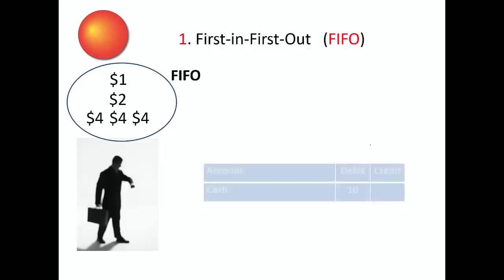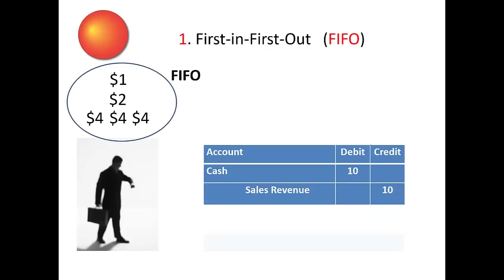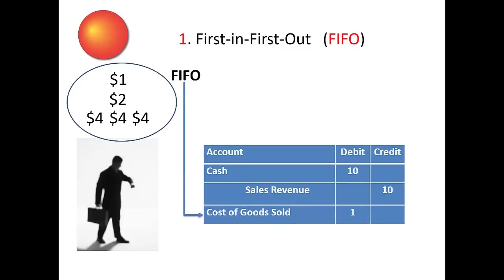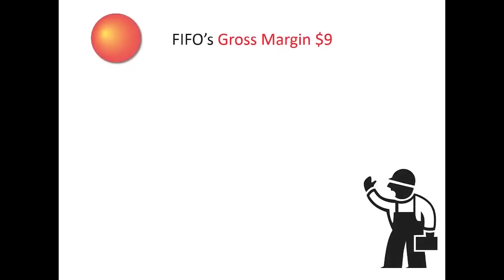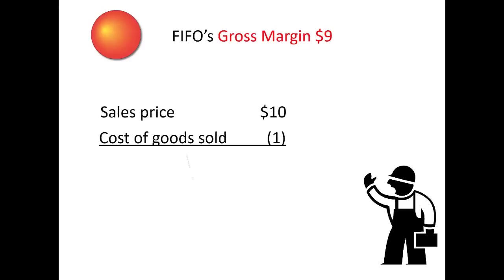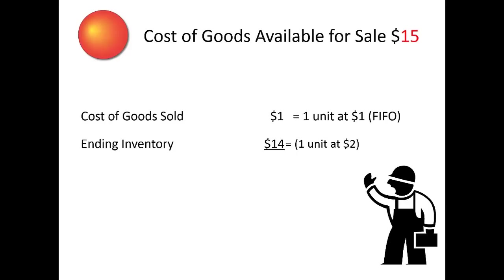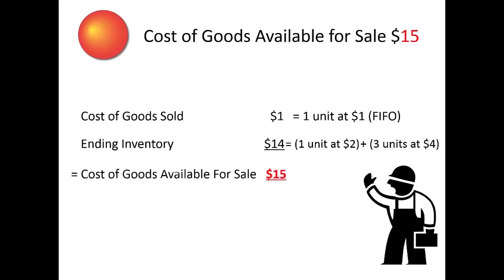This would require a debit to cash of $10 — assuming a cash sale — and a credit to sales revenue of $10, a debit to cost of goods sold for $1, increasing that expense, and a credit to inventory of $1, decreasing inventory. FIFO's gross margin turns out to be $9: sales price of $10 less cost of goods sold of $1. The original cost of goods available for sale of $15 reconciles as: cost of goods sold of $1 (one unit at $1) and ending inventory of $14 (one unit at $2 plus three units at $4).